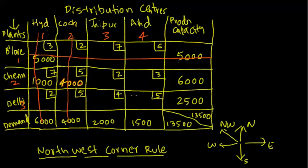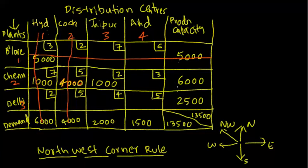Out of the four remaining cells, the northwest corner-most cell is x23. How many units can we supply from Chennai plant to Jaipur? Jaipur requires 2000 and Chennai has got 1000 more remaining. So the entire 1000 units can be shipped from Chennai plant to Jaipur distribution center, thus consuming the entire 6000 units of Chennai plant. I'll cancel this row.